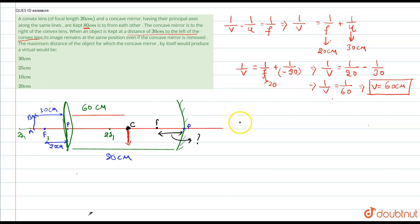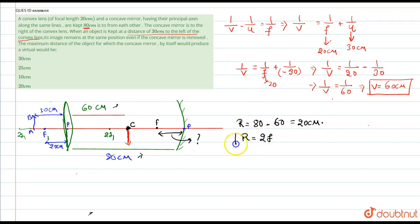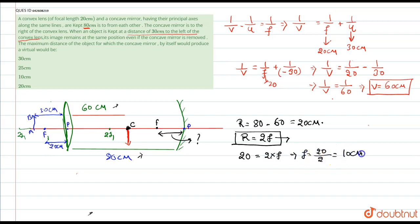To calculate the focal length, we first find the radius of curvature. The total separation is 80 cm and the image is at 60 cm from the lens, so the radius of curvature R equals 80 minus 60 equals 20 cm. Using R equals 2F, we get 20 equals 2 times F, so F equals 10 cm. This is the focal length of the concave mirror. A concave mirror produces a virtual image when the object is placed between its focus and pole, i.e., within 10 cm.